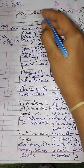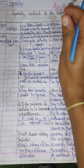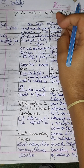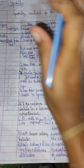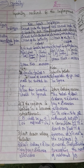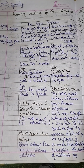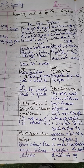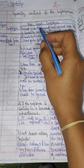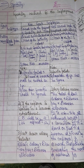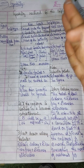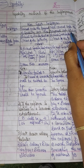Gratuity received at the time of employment — that is the heading. For government employees, gratuity is fully exempted from tax. For non-government employees, it is divided into two types: one is covered under the Payment of Gratuity Act 1972, and the other is not covered under the Act.